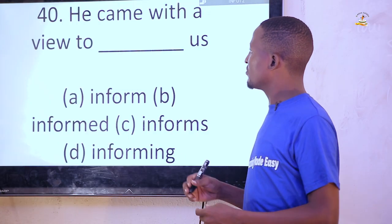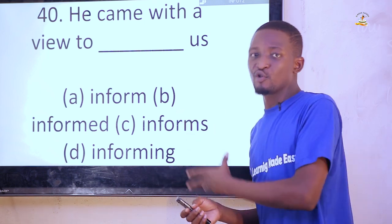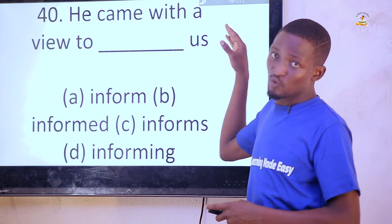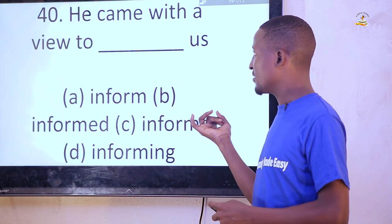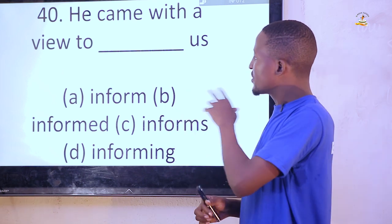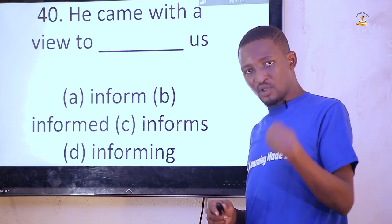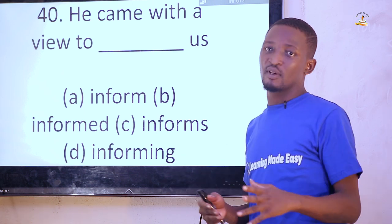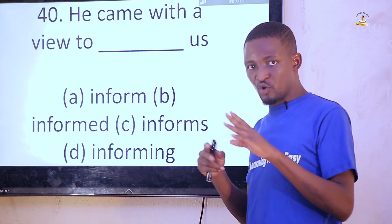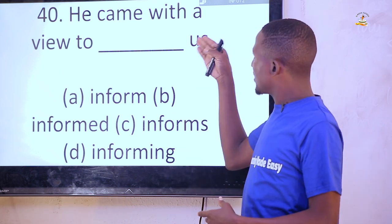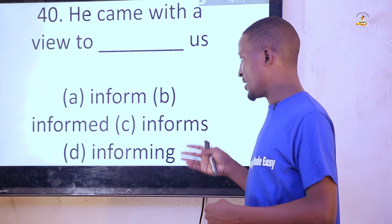'It came with a view to dash us.' Options: informed, inform, informing. After 'with a view to,' the next verb should be a continuous verb — a gerund — in its -ing form. He came with a view to informing us. Similarly: 'the governor was here with a view to developing the state,' not 'to develop.' Other verbs that follow this pattern: committed to, accustomed to, look forward to — 'I look forward to meeting you tomorrow.' After these, use the gerundial form.